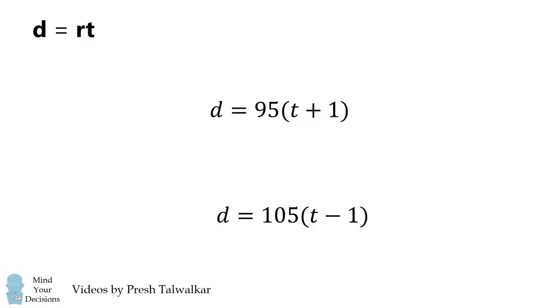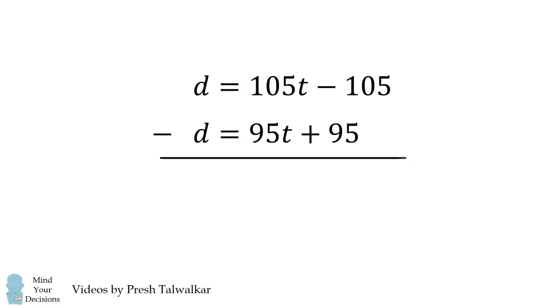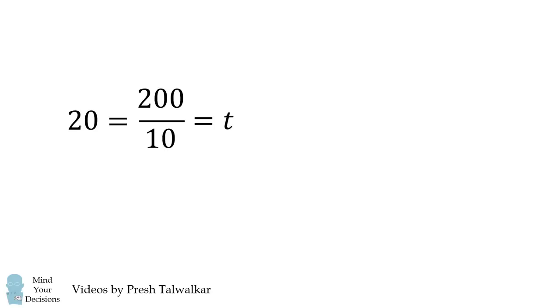We'll distribute the rates, and then we'll solve by subtracting the second equation from the first. This eliminates the variable d. We get 0 = 10t - 200. We then solve for t. We add 200 to both sides, and then divide by 10. So t is equal to 20, and we're dealing with minutes. So t = 20 minutes.